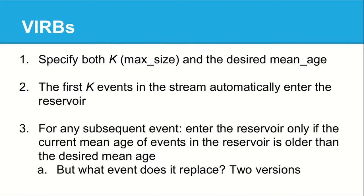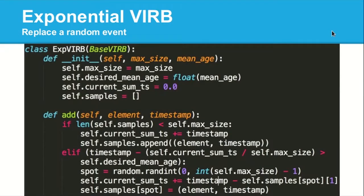After that, we start asking: what's the current mean age in the reservoir, and how does that compare to what we want it to be? If the current mean age is too old, we add new events to make it younger. In classic reservoir sampling we're always replacing a random event, and you could do that — or something else. There are two versions of the VERB sampler. The exponential VERB replaces a random event whenever we choose to add a new event. We store the current sum of timestamps so we can figure out the mean age at any point. If the current mean age is older than the desired mean age, we add a new event and use it to replace a random old event.